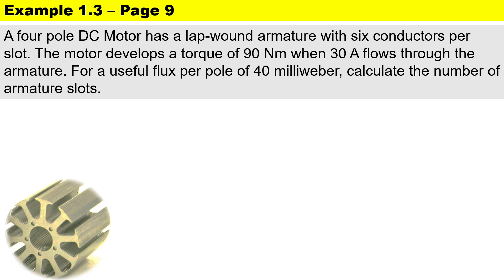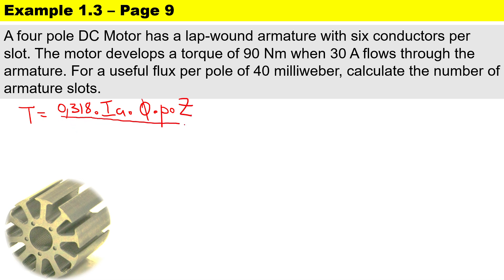Since we have been given a torque of 90 newton meters, we're going to use the torque formula to solve our problem. The torque formula is: torque equals 0.318 times the armature current, multiplied by the flux per pole measured in weber, times the number of pole pairs, times z (the total number of armature conductors), divided by c (the number of parallel paths).